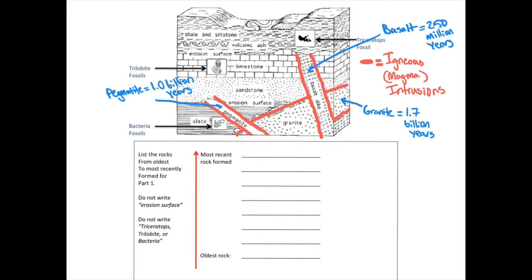We're going to determine the relative ages of the three fossils in this rock sequence: the bacteria fossil buried inside the slate, the trilobite fossil buried inside the limestone, and the triceratops fossil inside the shale and siltstone layer above the volcanic ash. We're going to be able to find rough estimates, time constraints of the ages of these fossils. Even though we can't find an age of the slate, limestone, or shale and siltstone layer, we are going to be able to get pretty good time constraints.